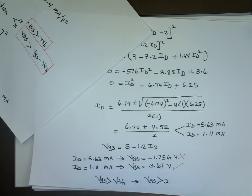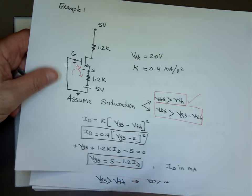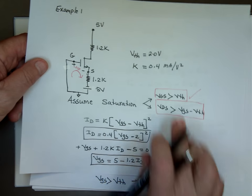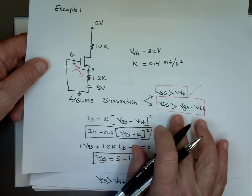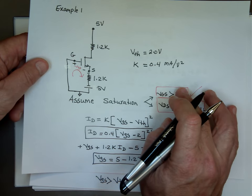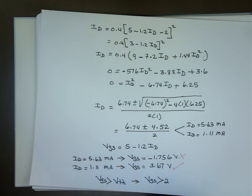So I did satisfy the first condition. Is VGS bigger than threshold? Yes. I still need to satisfy this to be in saturation. Just because I'm good here, that doesn't mean I'm done. So let me go back here and let me find what VDS equal to.